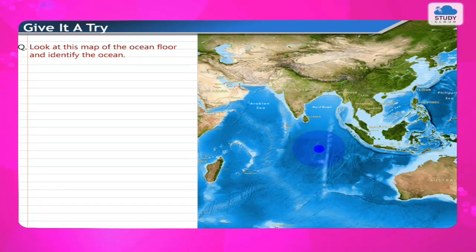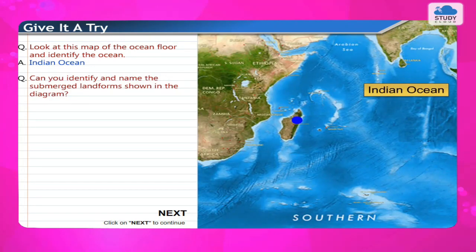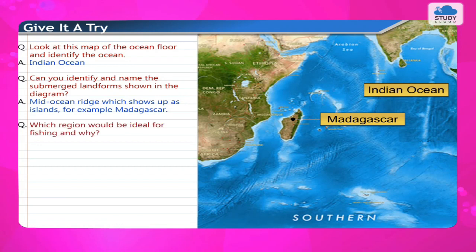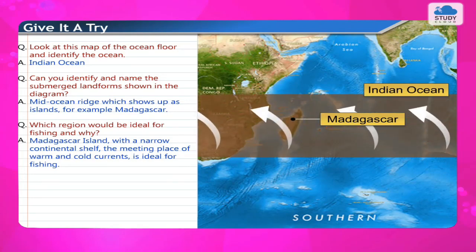Looking at a map of the ocean floor, the ocean identified is the Indian Ocean. The submerged landforms shown include a mid-ocean ridge which shows up as islands, for example Madagascar. The region ideal for fishing is around Madagascar island, where a narrow continental shelf and the meeting place of warm and cold currents creates ideal fishing conditions.